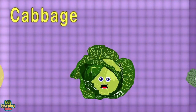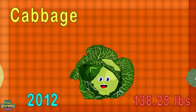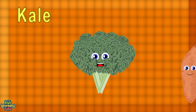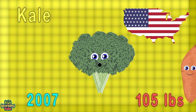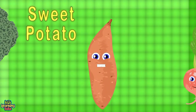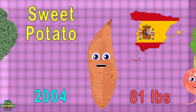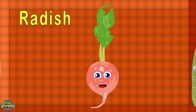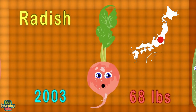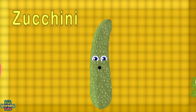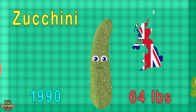I'm the biggest cabbage — I weigh 138 pounds, grown in the USA in 2012. I'm the world's largest kale at 105 pounds, from the United States in 2007. The biggest sweet potato weighed in at 81 pounds in Spain in 2004. I'm the biggest radish at 68 pounds, in Japan in 2003. The biggest zucchini would be at 64 pounds, weighed in the UK in 1990.